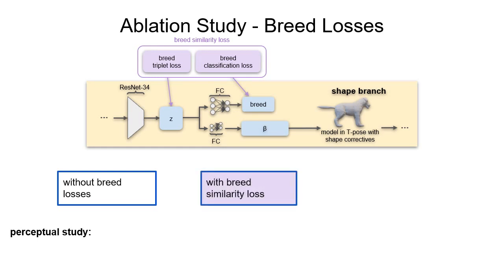We then add breed similarity loss, which consists of a classification and triplet loss, and compare the new results to the baseline. Participants rate the method trained with breed similarity loss as producing shapes more representative of the breed shape.